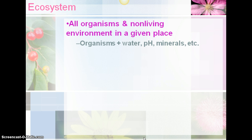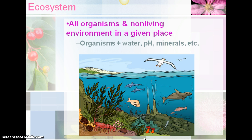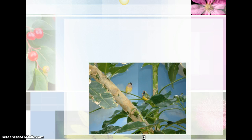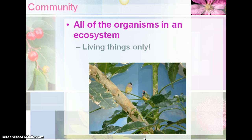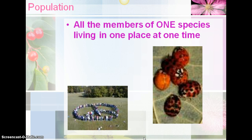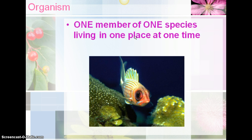That non-living material is just there and part of the environment. A community is a little more specific — all of the organisms in an ecosystem, so living things only. A population is all the members of one species that live in one place at one time — those key parts are important: one species, one place, one time. And then the organism is one member of one species living in one place at one time — we narrow down to that one individual.